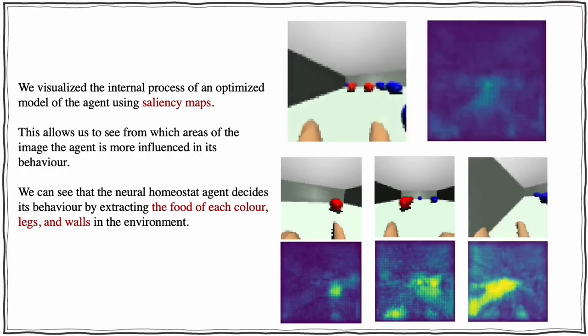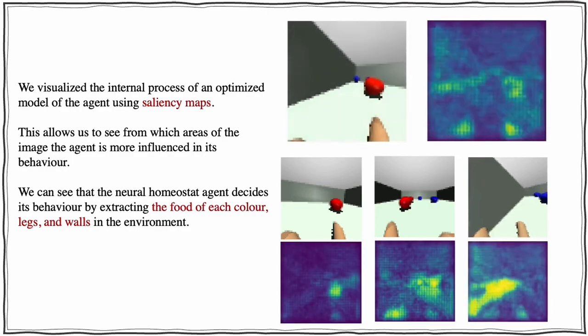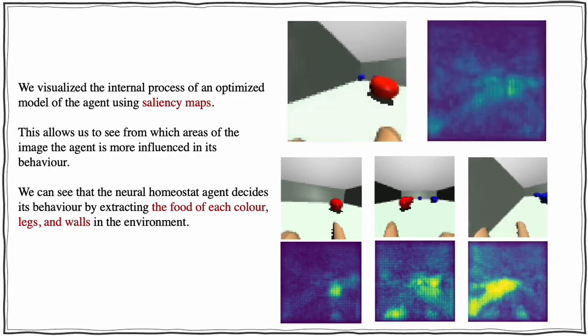We can see that the neural homeostat agent decides its behavior by extracting the food of each color, the legs, and the walls in the environment.